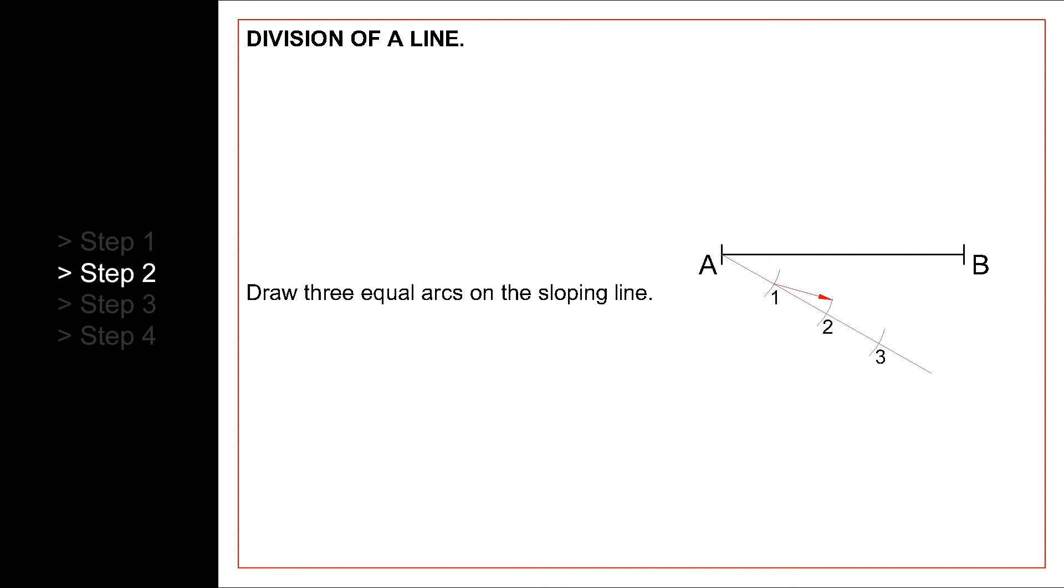Next, we draw three arcs on the sloping line. The size of these arcs is also not important, as long as they are equal. Label those arcs as 1, 2 and 3.